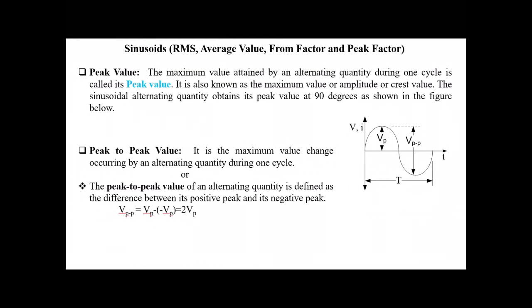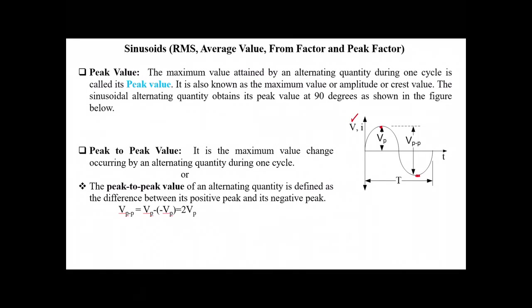This is the sinusoidal waveform for an alternating quantity — it could be the current or voltage as mentioned on the y-axis. We can see that the positive peak value of this waveform is attained at 90 degrees, which is represented by Vp, while the negative peak value is on the other half.